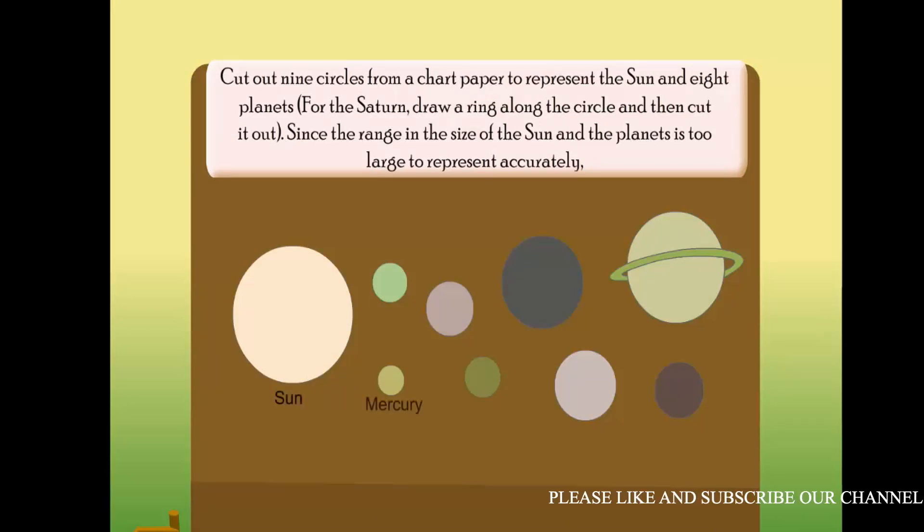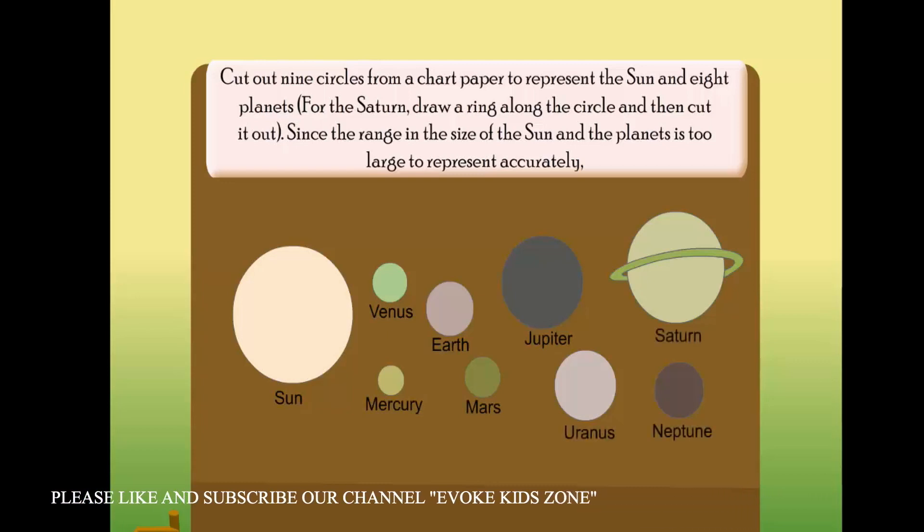Cut out nine circles from chart paper to represent the Sun and eight planets. For Saturn, draw a ring along the circle and then cut it out. Since the range in the size of the Sun and the planets is too large to represent accurately...